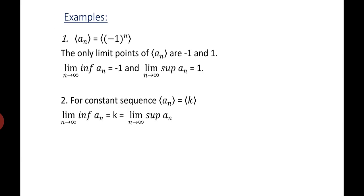Let's consider a few examples. The first problem: the sequence is given as (-1)^n. We know the only limit points are -1 and +1. We get -1 when n is odd and +1 when n is even. According to the definition, lim_{n→∞} inf(a_n) is the least value, which is -1, and lim_{n→∞} sup(a_n) is the greatest value, which is +1.